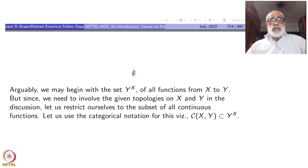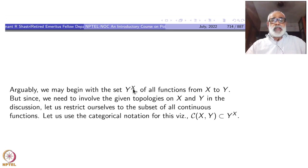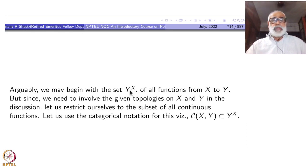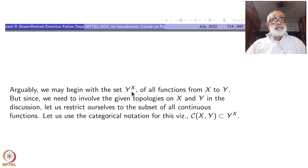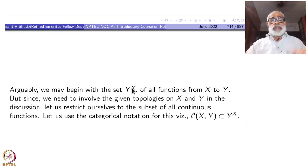We may begin with the set Y^X — this notation is for the set of all functions from X to Y. It is also equivalent to the product of copies of Y, as many as there are elements of X. You can think of each copy of Y indexed by alpha, then take the product indexed by X — that is the same as all set-theoretic functions from X to Y. But that will involve only the topology on Y; the product topology has nothing to do with the indexing set X. We want to bring the topology of X also into the picture.